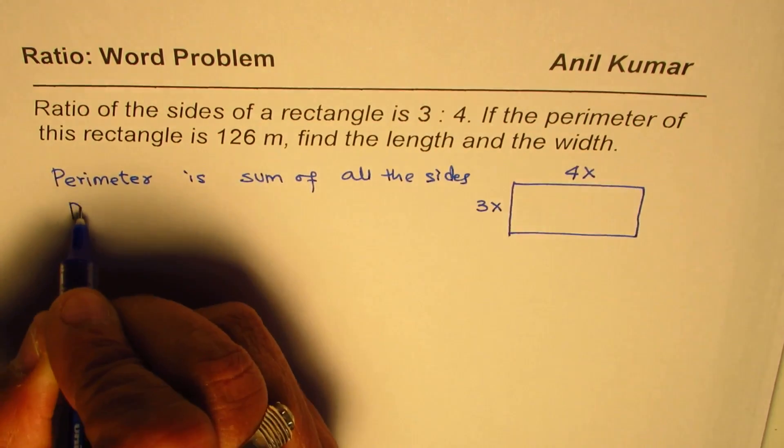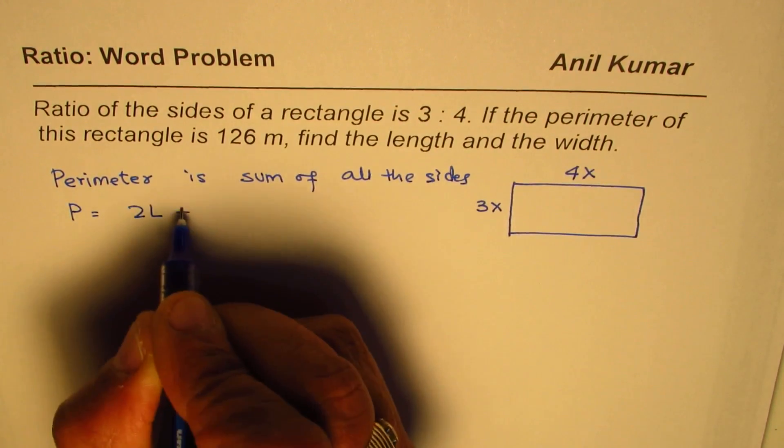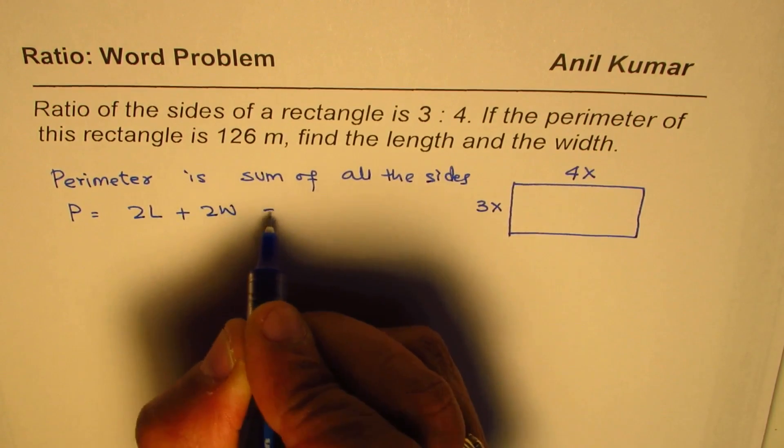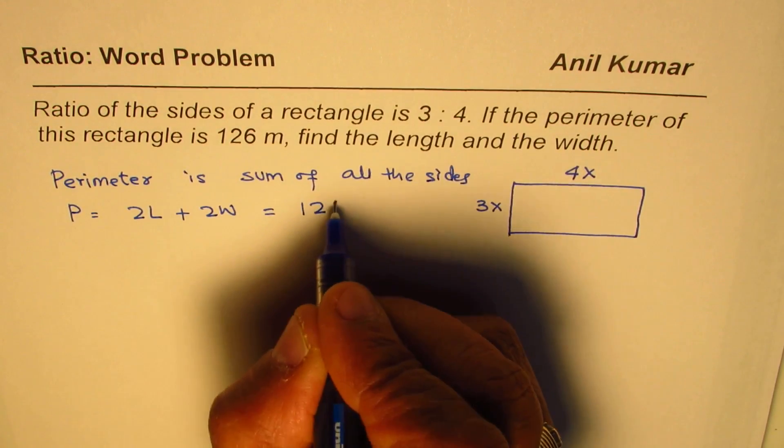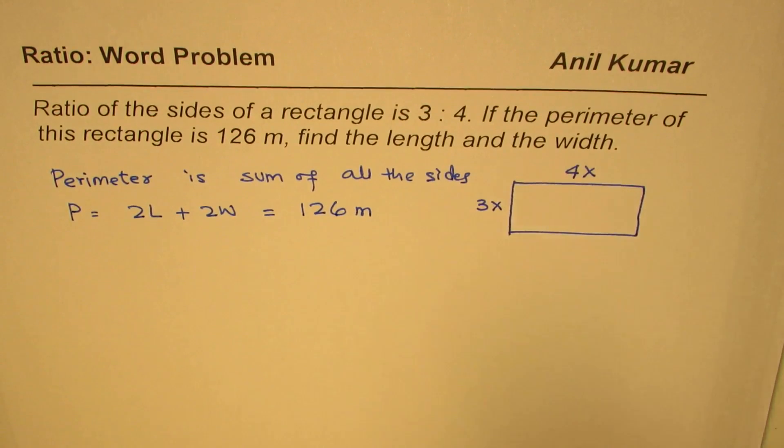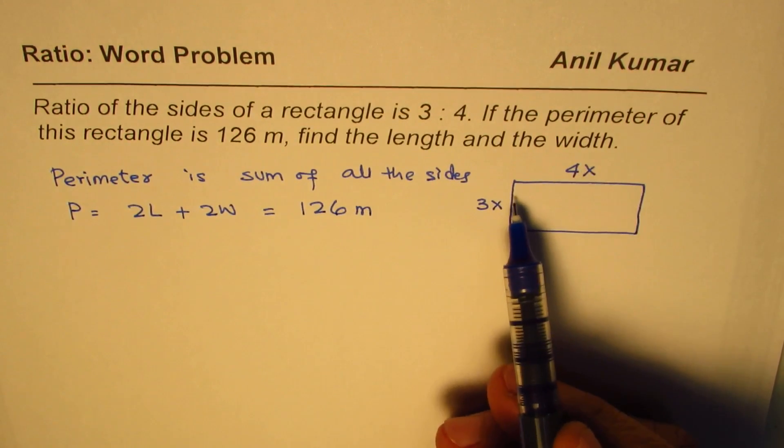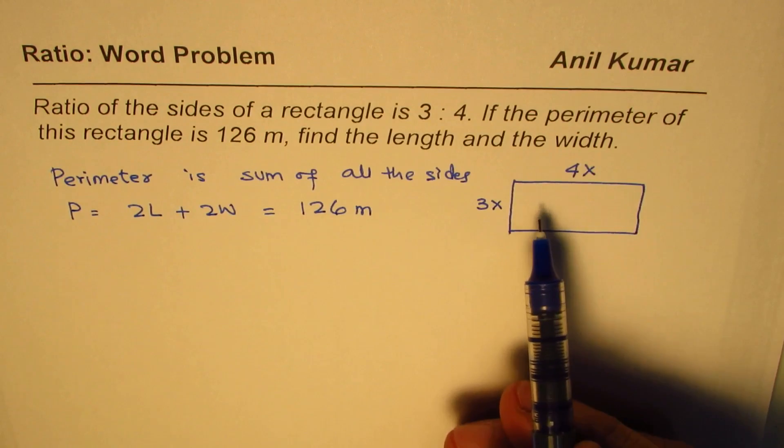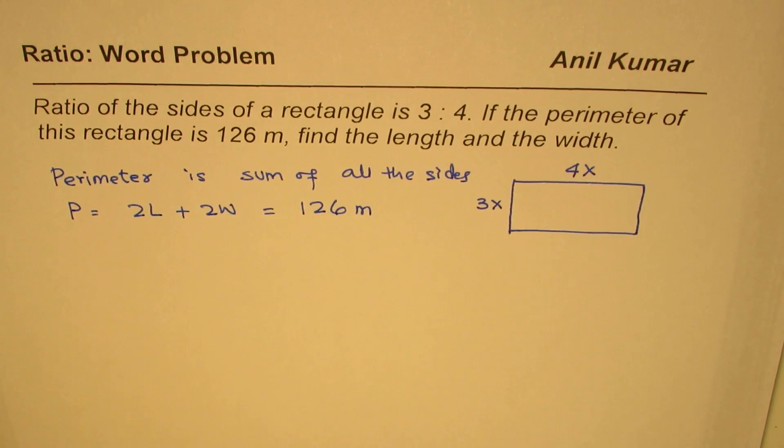So we say perimeter P is 2 times length plus 2 times width and that is given to us as 126 meters. We have to find what should be the dimensions or what should be length and width of this rectangle. That is the question for you. I hope the question is very clear. You can now pause the video, answer the question and then look into my suggestions.